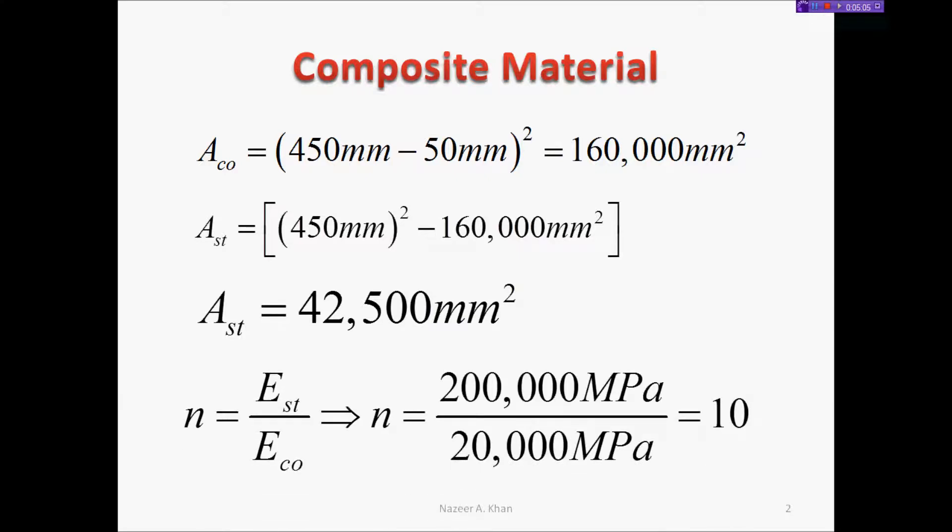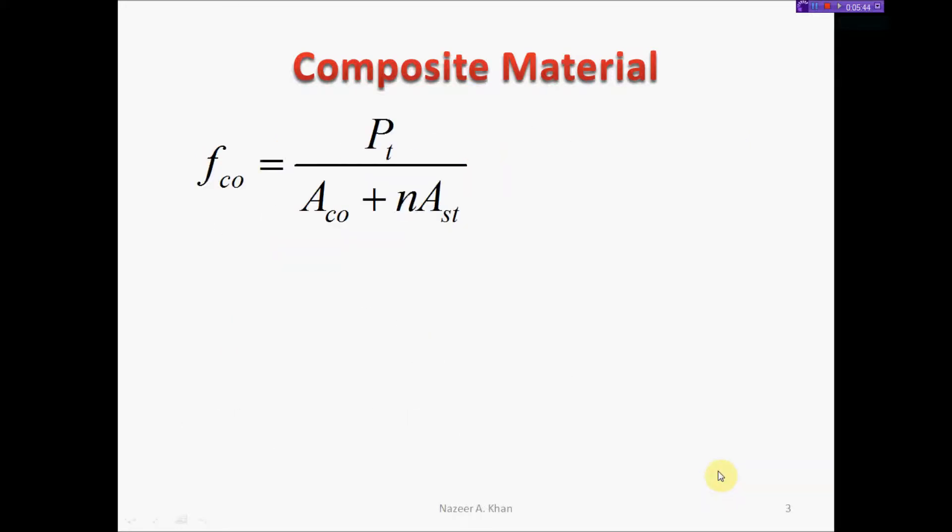Let's calculate the n value, the ratio between the modulus of elasticity of the two materials. We have 200,000 MPa for steel and 20,000 MPa for concrete. When you divide, n equals 10, a unitless number. Now we have the areas and n value, so we can calculate the stress of concrete.